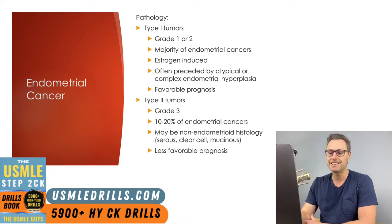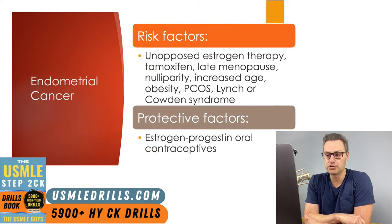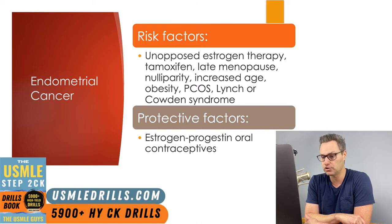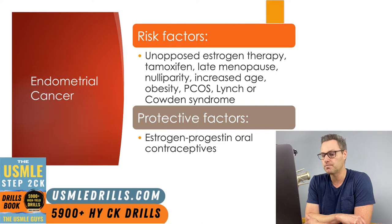Type 2 tumors are unrelated to estrogen stimulation. Many risk factors are going to be related to estrogen exposure, and these are risk factors for type 1 tumors. Exogenous sources of estrogen that can contribute to the development of type 1 endometrial cancer include things like unopposed estrogen therapy — this could be therapy used to treat symptoms of menopause, or estrogen-based birth control used without concurrent progestin use.